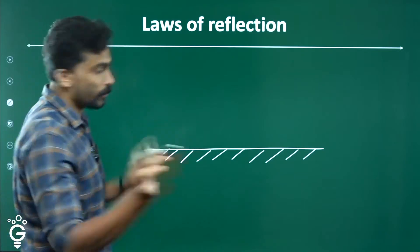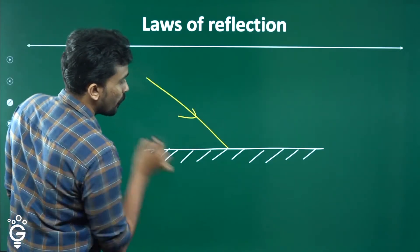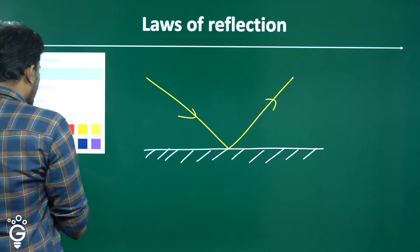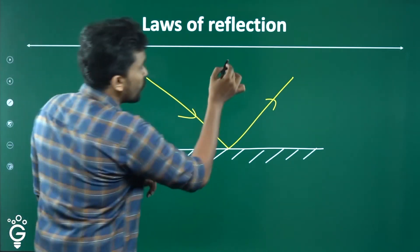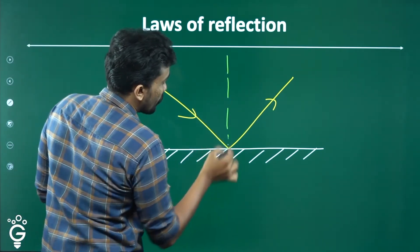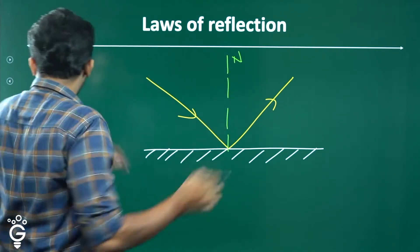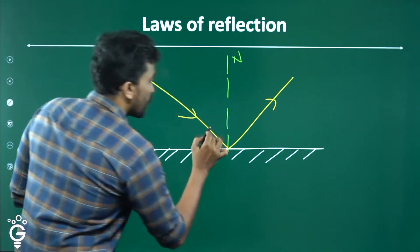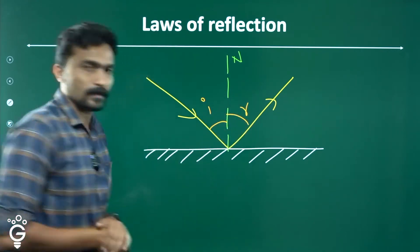A ray of light that is reflected. Now, if we explain this, we will see the normal. This is our normal. The two angles are marked. This is the R angle.